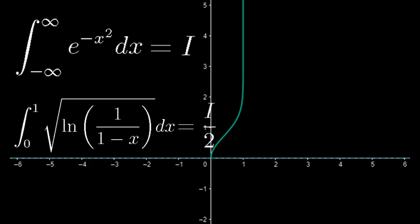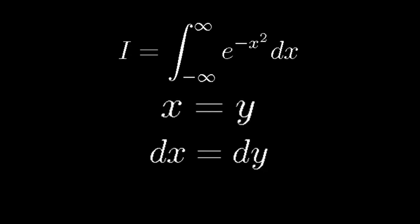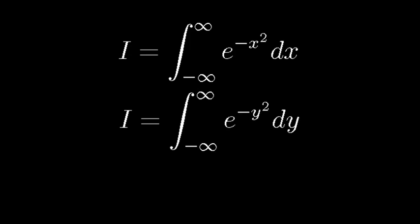But what we do know how to integrate is the ln of x, so it seems like a good idea to find i squared. Back to the original equation, if y equals x and dy equals dx, we can get that i equals the integral of e to the negative y squared. Let's multiply these two together.